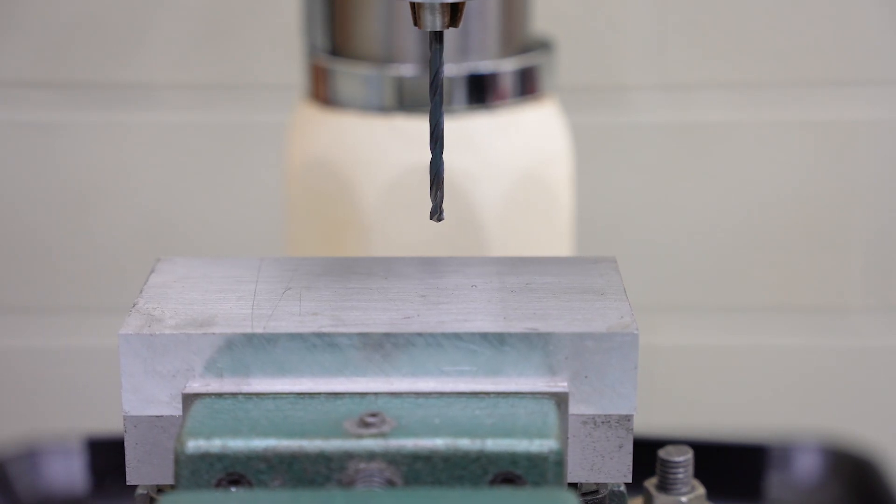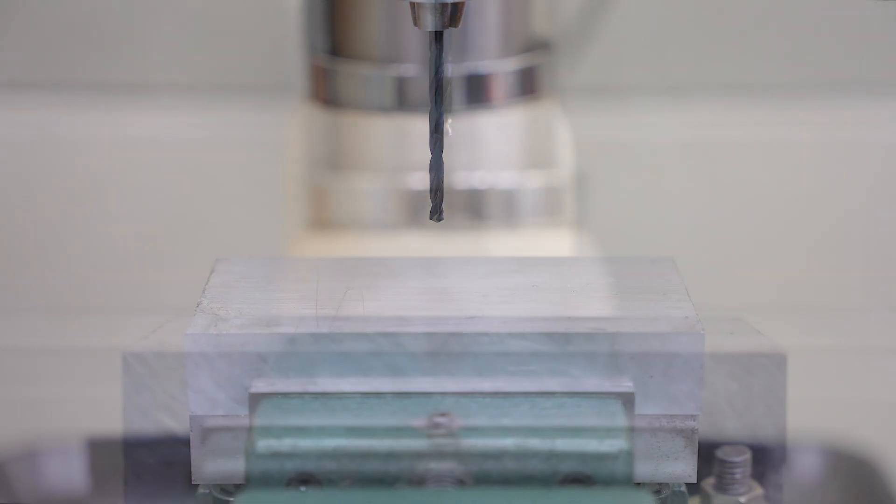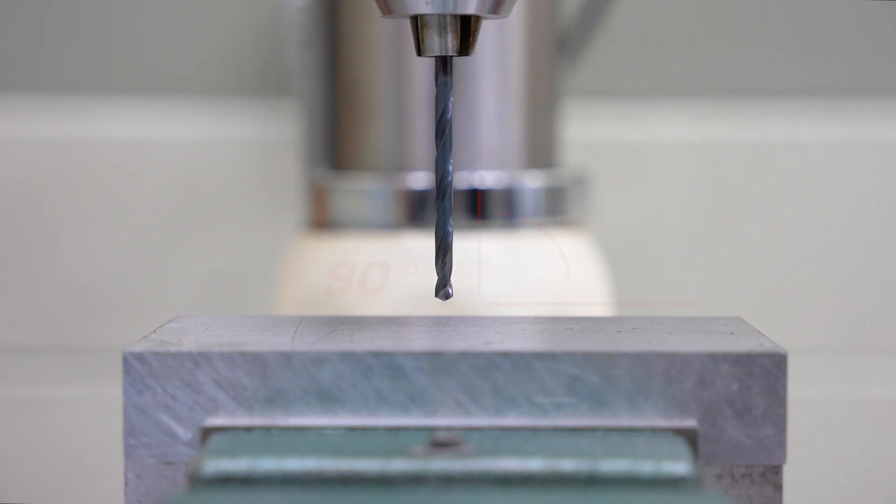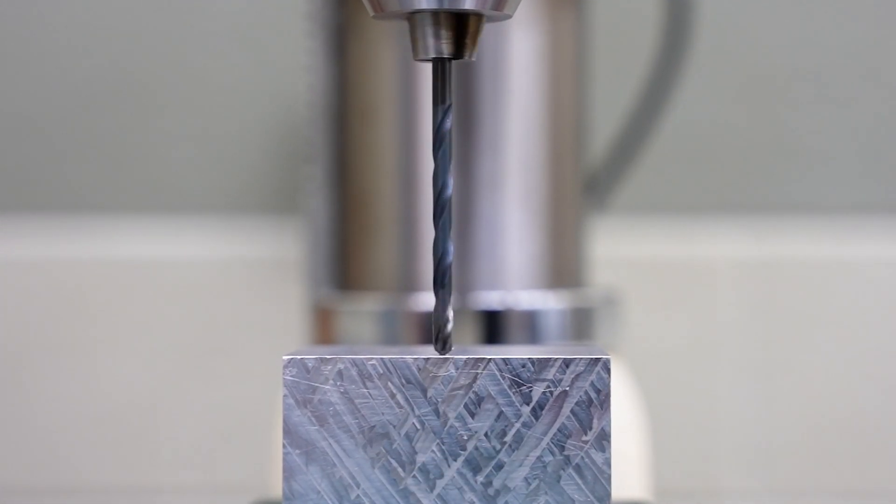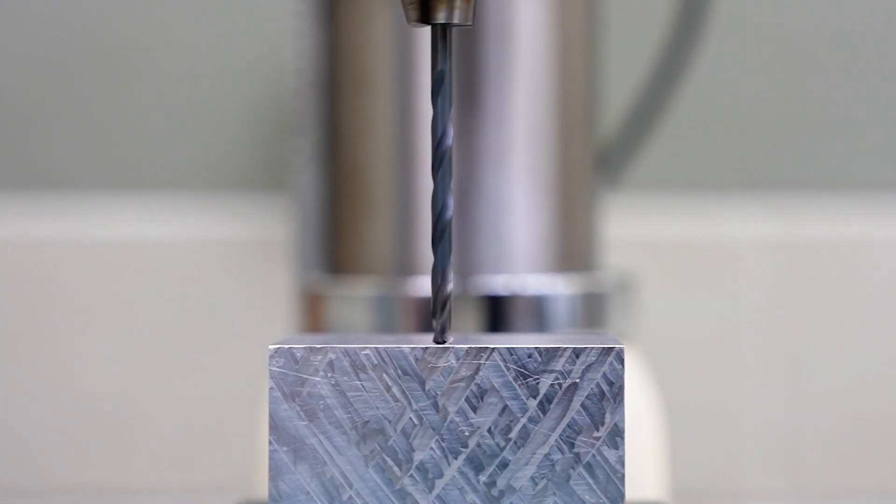If you use a machine like a drill press or a CNC, most of the hard work will be done for you. When the drill is held perpendicular to the material and downforce is helped by levers or motors, a conical point can be just as useful.